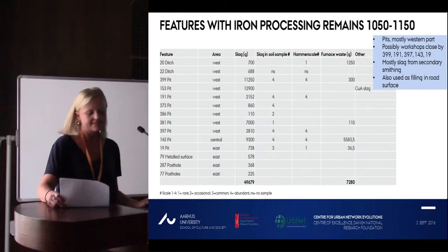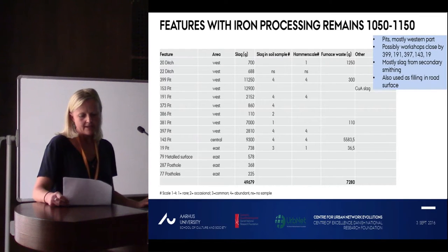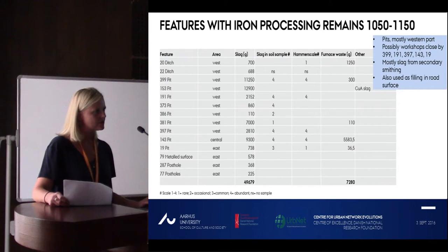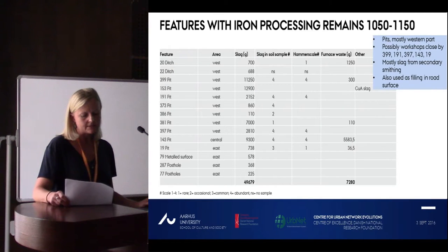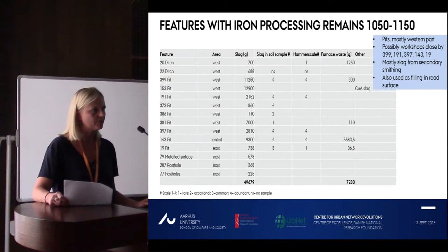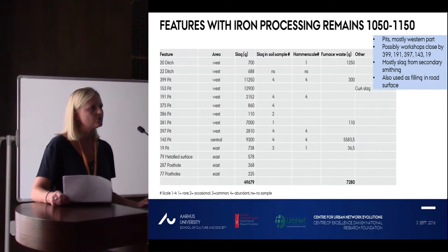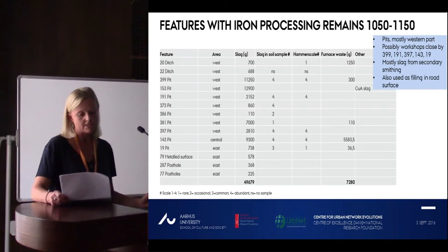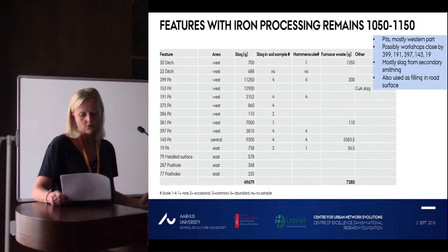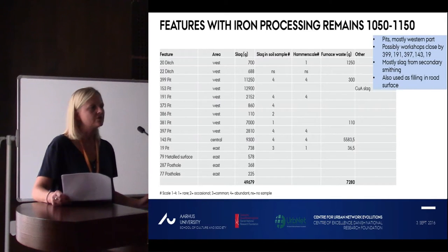This is the same information presented in a table, with the types and amounts of waste plotted. The remains are found mostly in pits and mostly in the western part, although all areas are represented. Some features containing more types and larger amounts of waste are likely situated close to workshops, while others may just reflect unintentional deposition from waste transportation. There is mostly slag from secondary smithing, although some primary smithing occurs as well. Slag is also used in a metal surface, which I will discuss shortly.